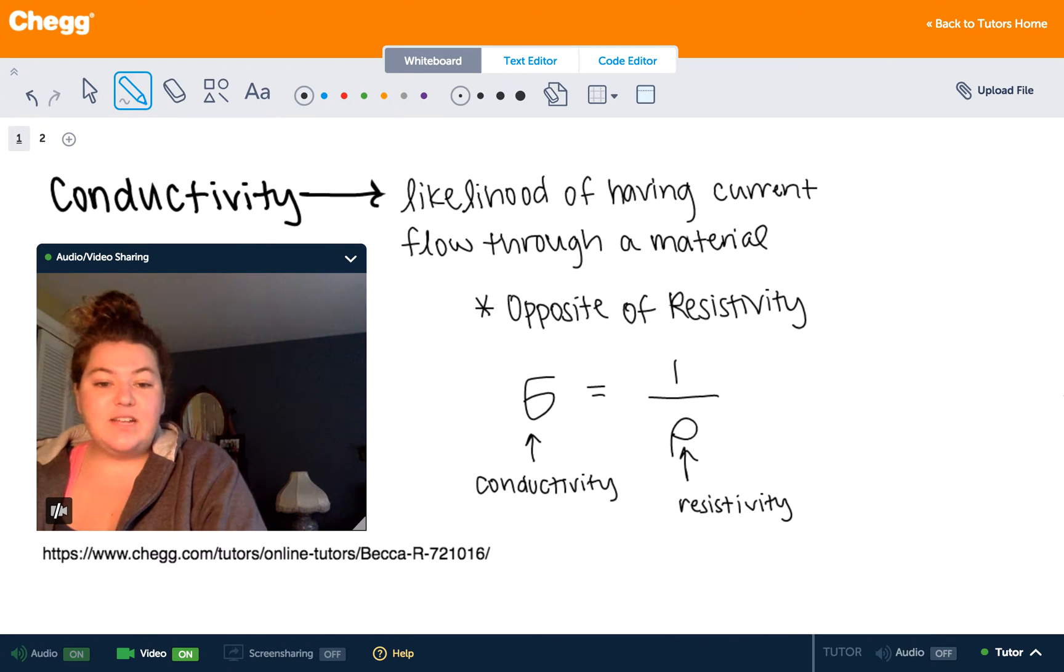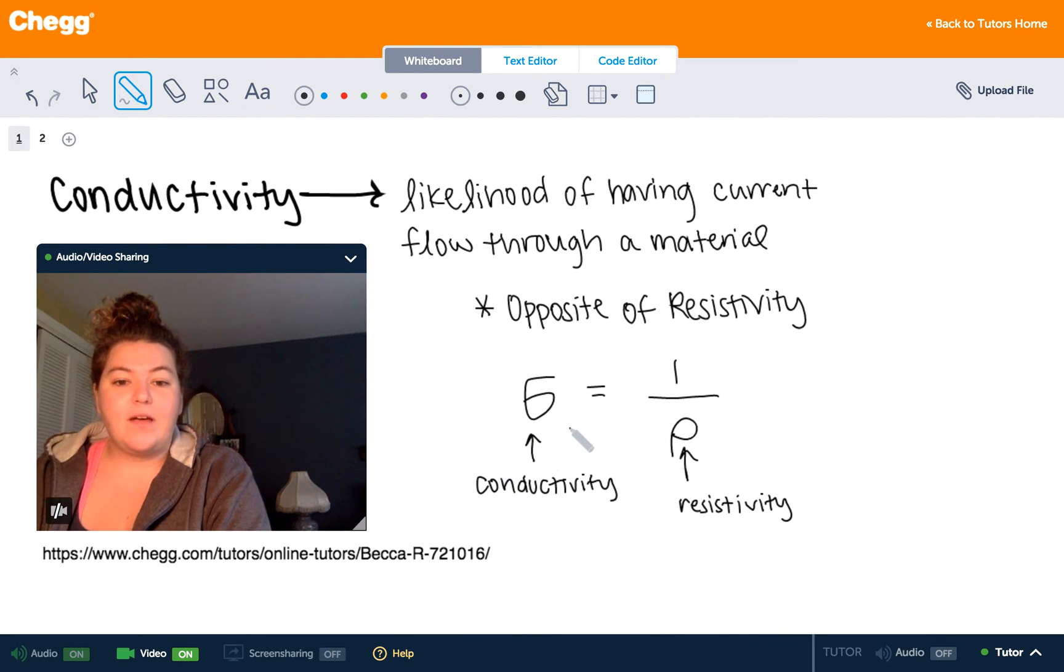So conductivity is given as the Greek letter lowercase sigma, which I draw like that. And resistivity is given by the Greek letter rho, which I draw like that. So if you would like to find the conductivity of a material, you would simply take the reciprocal or the opposite of the resistivity.